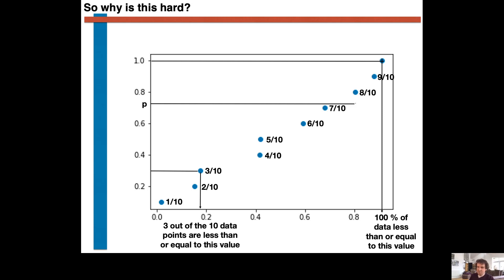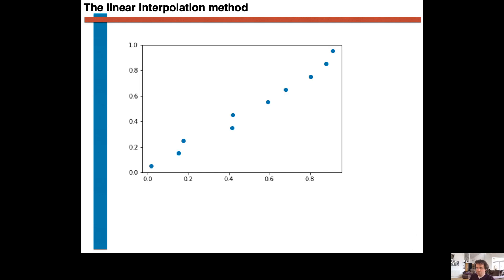In this method of approximating the cumulative probability distribution function, we will start by plotting the sorted data as we did on the previous slide. Furthermore, we will assume that the largest sample that we obtained is the largest possible value that the random variable can take. The value of the cumulative probability distribution function at this x value is thus 1. We are assuming that every random variable that we might generate in future will be less than or equal to this value. At variance with what we did on the previous slide, we are going to state that the value of the cumulative distribution function at the minimum data point is zero. We are thus assuming that every random variable that we might generate in future from this distribution will be greater than this value.